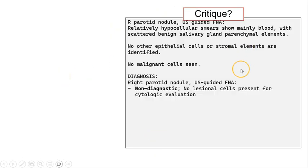Here is another example for critique. Right parotid nodule, ultrasound-guided FNA, relatively hypocellular smears from mostly blood, scattered benign salivary gland parenchymal elements, no other epithelial or stromal cells, non-diagnostic.